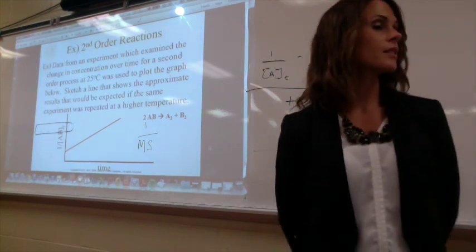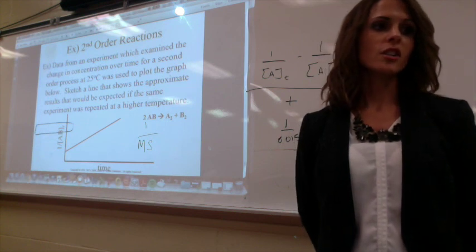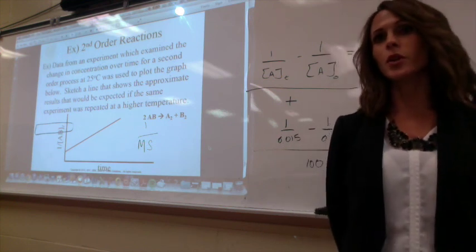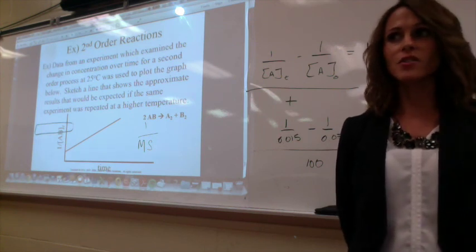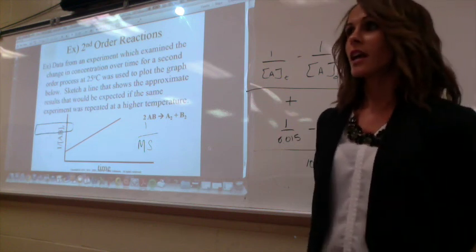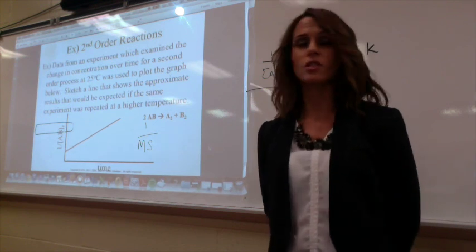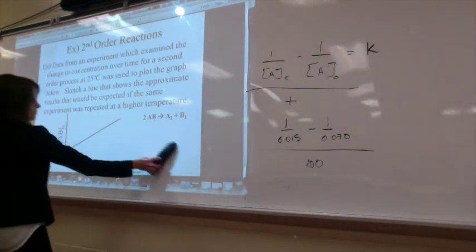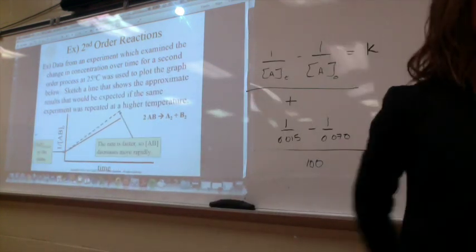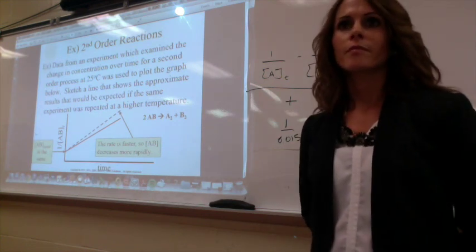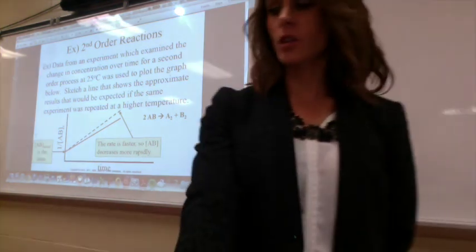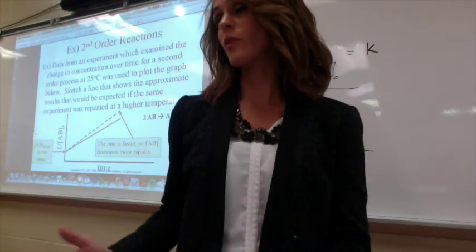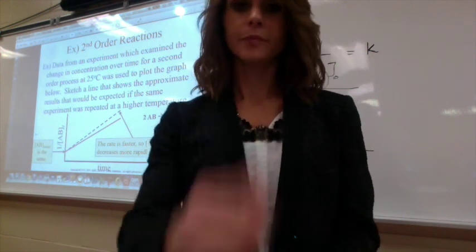Data from this experiment was collected for a second order process. Sketch a line showing approximate results if the same experiment was repeated at a higher temperature. Higher temperature means faster reaction, so the slope should be steeper. They need to start at the same time zero and same initial concentration. The dotted line should be steeper than the original. Now we're going to do the AP question.